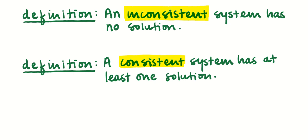Before we really begin, I need to remind you of what I mean by consistent and inconsistent. An inconsistent system has no solution, whereas a consistent system has at least one solution — it could have a unique solution or infinitely many solutions. A consistent system would be one that has more than no solutions.